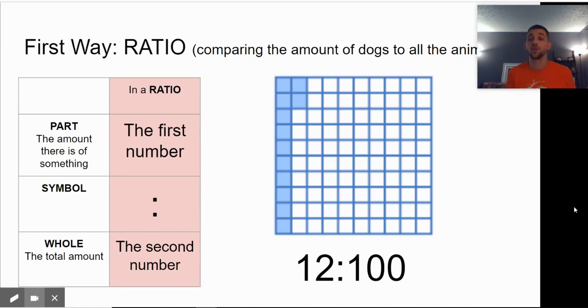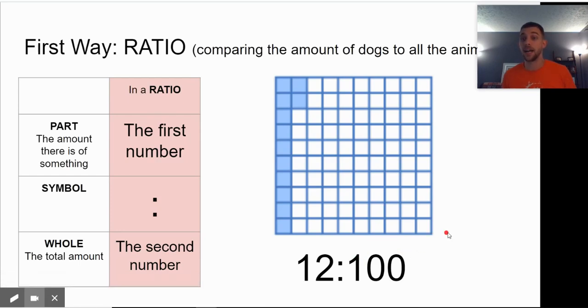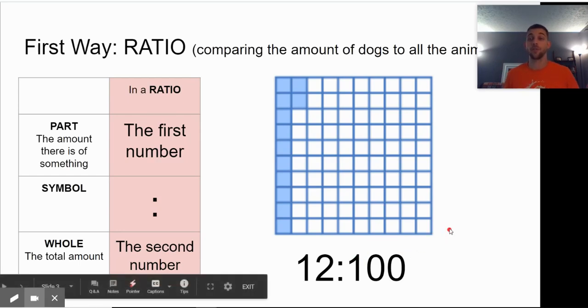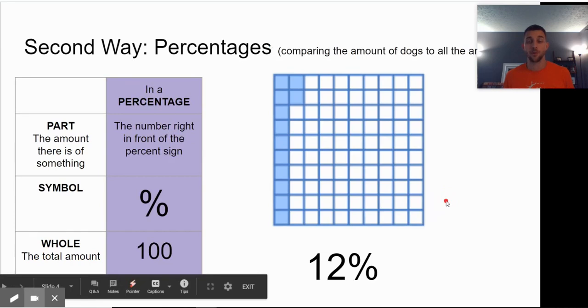Let's pretend like there were 12 dogs and 100 total animals. So in this case, we have our grid showing 12 blue dogs and 100 total. Again, we would set this up and we have 12 and 100. That's my ratio. This could simplify by dividing and we could have 6 over 50 and then 3 over 25. That's by simplifying our fraction or our ratio.